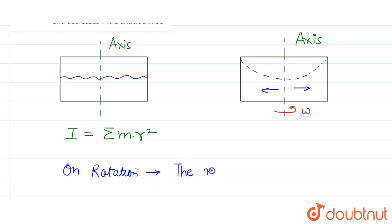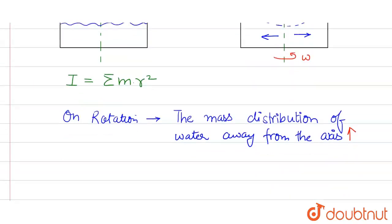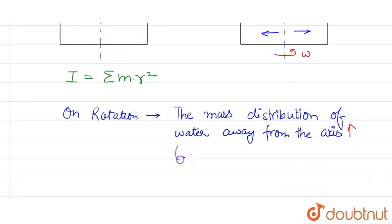So on rotation, what happens? The mass distribution away from the axis increases. This is actually r. Therefore we can see moment of inertia increases on rotation.